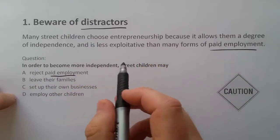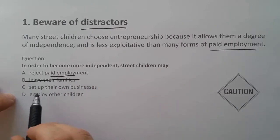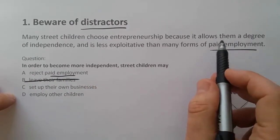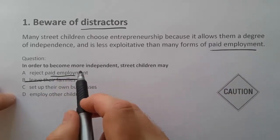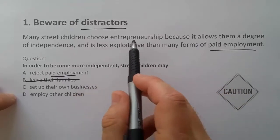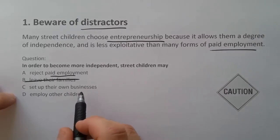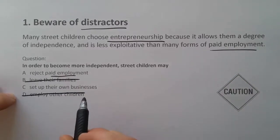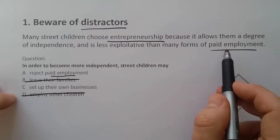But let's keep looking at the other options. 'Leave their families' — there's nothing about that, so we'll cross that out. 'Set up their own business' — well, there was something about that. Many children choose entrepreneurship because it allows them a degree of independence. 'Become more independent' connects to 'allows them a degree of independence.' And entrepreneurship means setting up your own business, so that looks pretty good. 'Employ other children' — that's clearly wrong, there's nothing about that, so I'll cross that out.